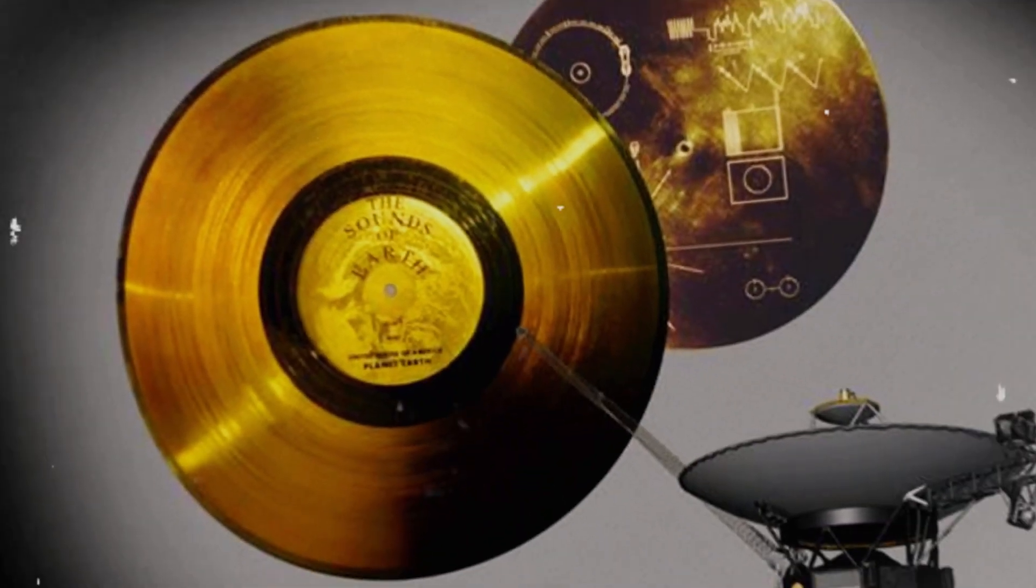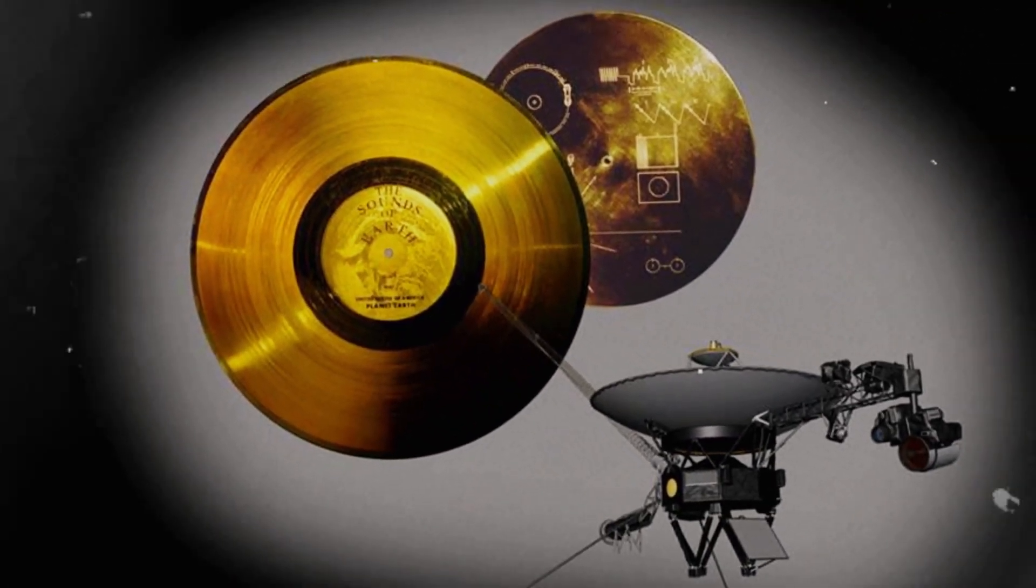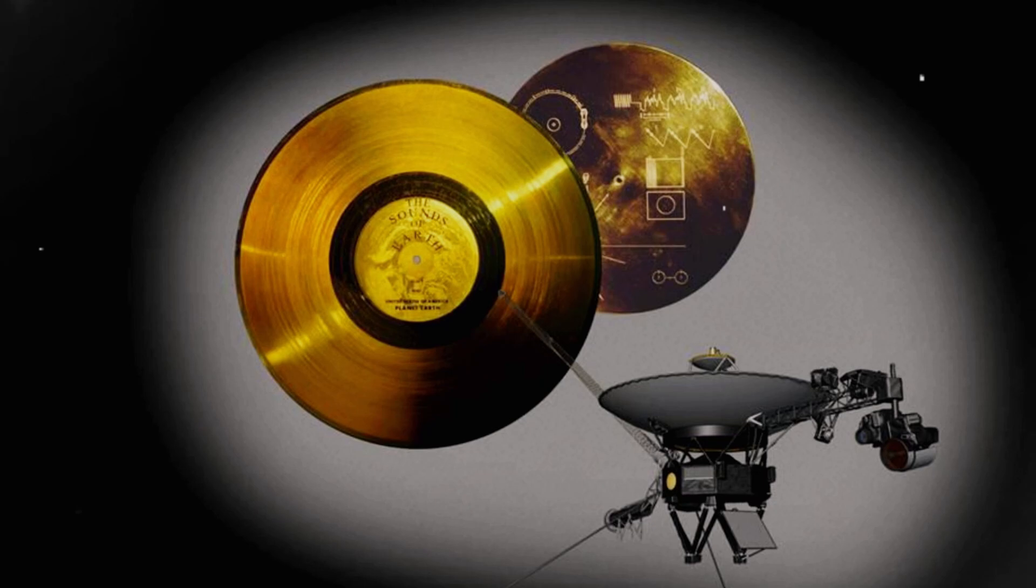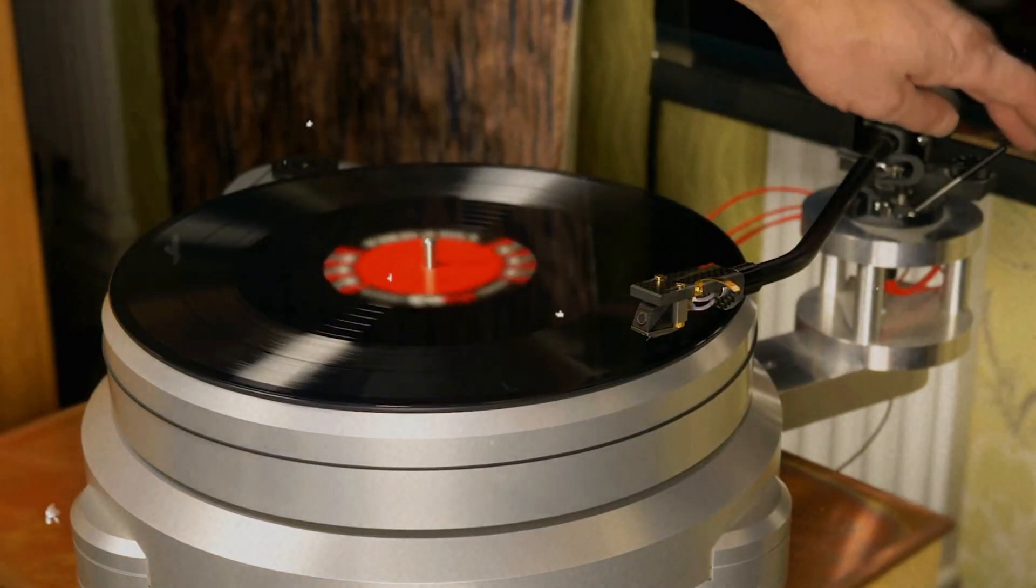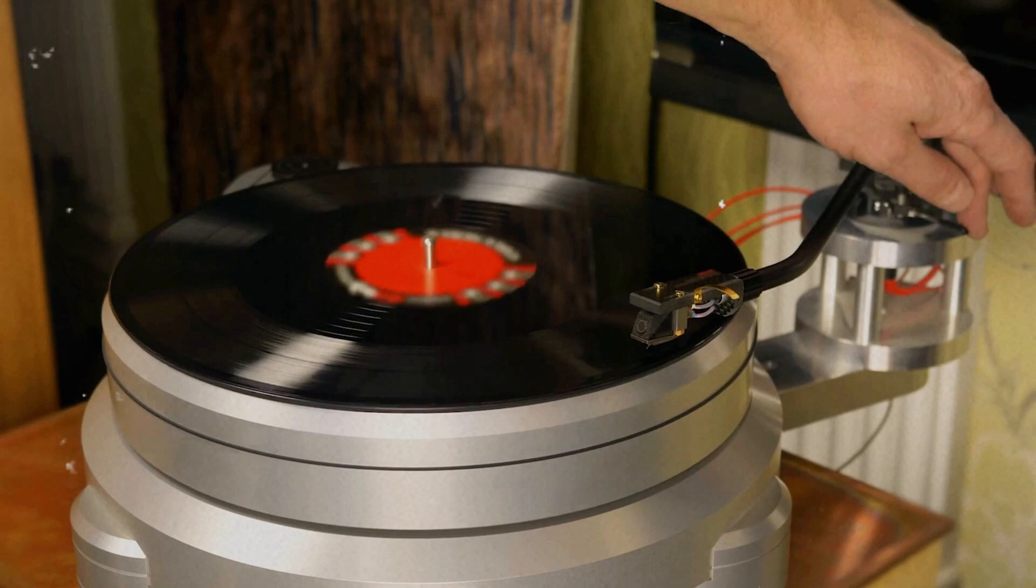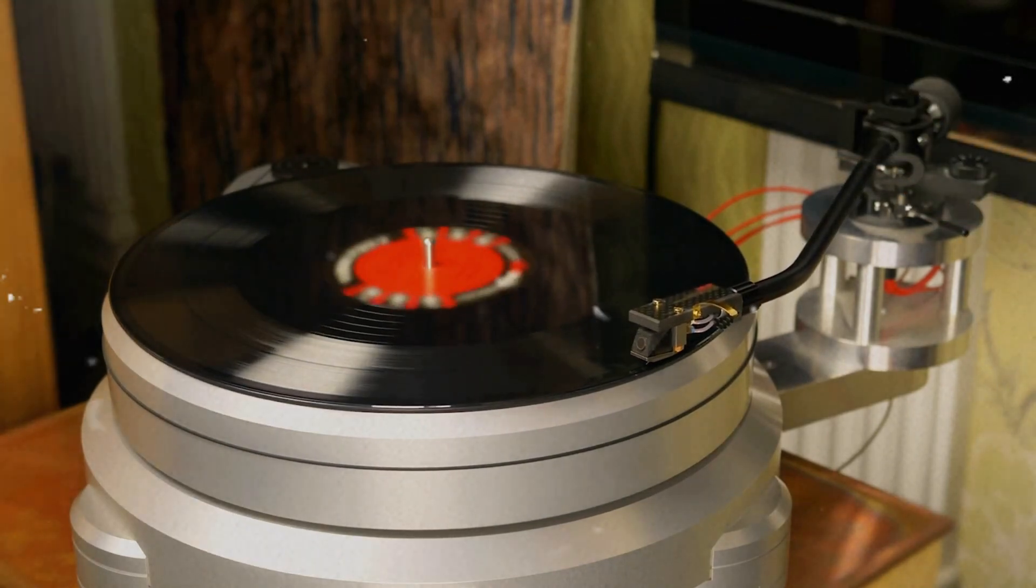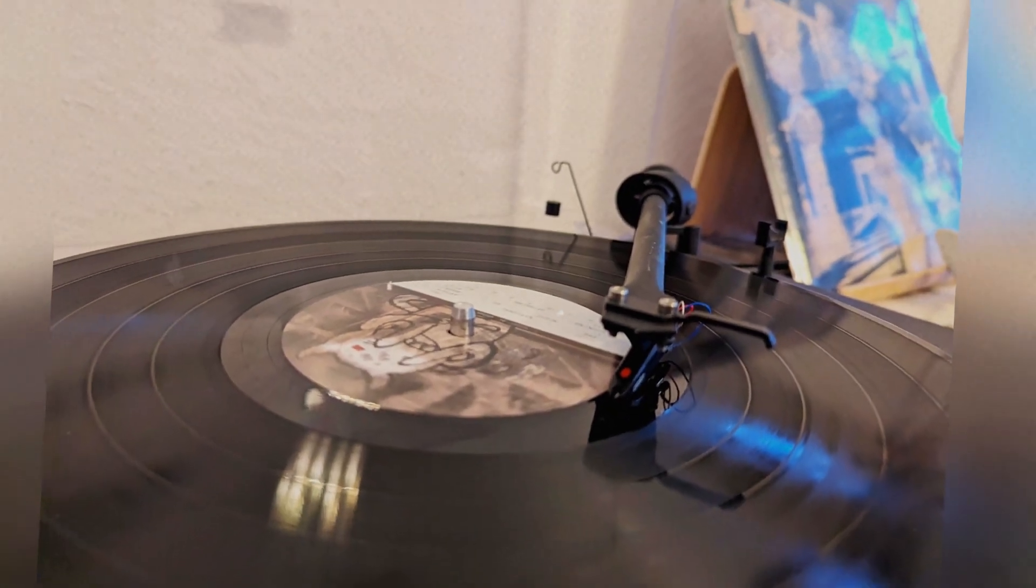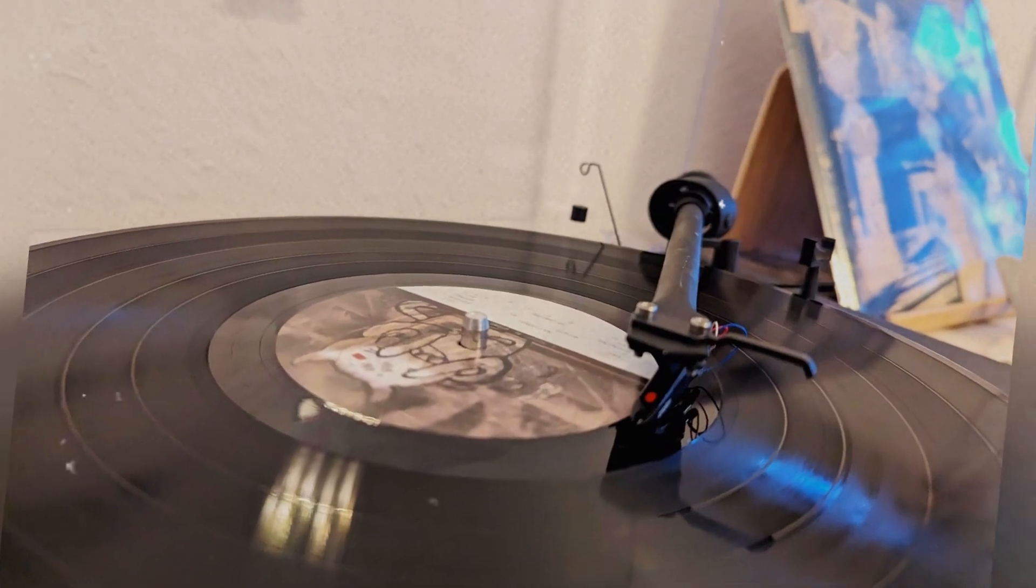Constructed from durable copper and gold-plated to withstand space conditions, the records are designed to last billions of years. They come with instructions in scientific and mathematical languages, as well as English, detailing how to play the records. This careful design ensures that any future discoverers can interpret the message.